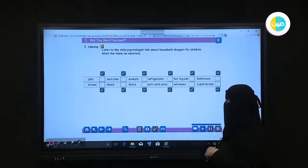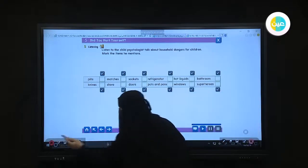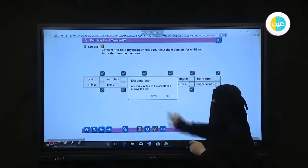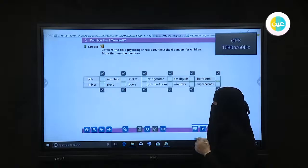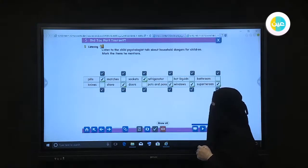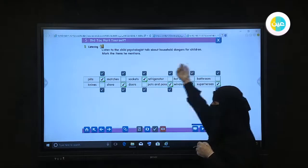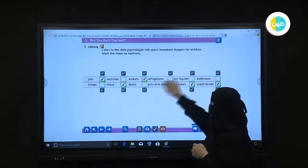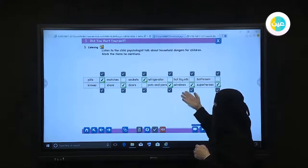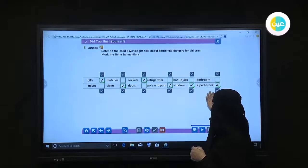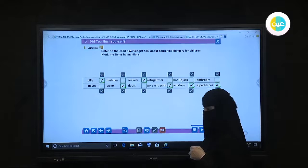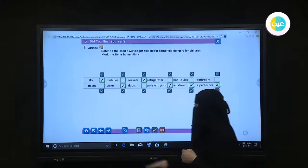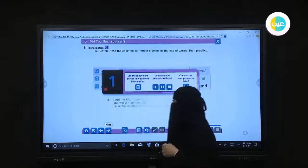So let me check the answer together. Which ones did we match with what we heard from the man who talked before? Let me check that. He mentioned pills. After that, he mentioned refrigerator and doors, and he mentioned windows, and the last one, he mentioned superheroes. Okay, let's go to the next page, the next point after that.